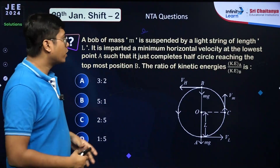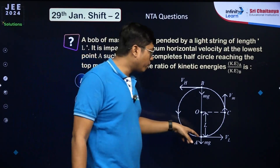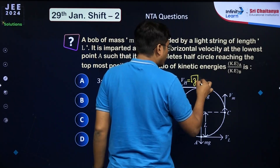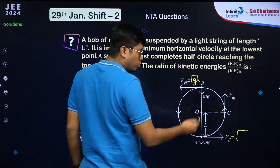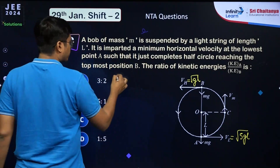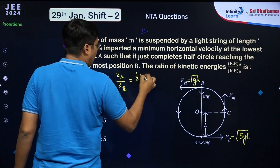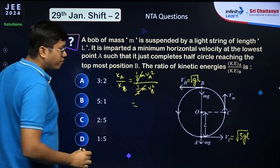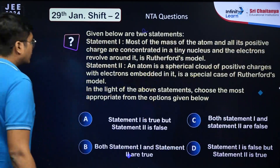A bob is given minimum horizontal velocity to just complete a vertical circle. The minimum speed at the top is vₜ = √(gL), and at the bottom vb = √(5gL). The ratio KE_top/KE_bottom = vₜ²/vb² = gL/(5gL) = 1/5, so the ratio KE_bottom:KE_top = 5:1.